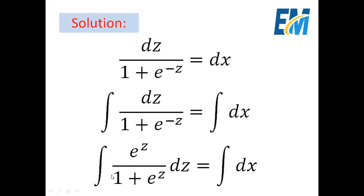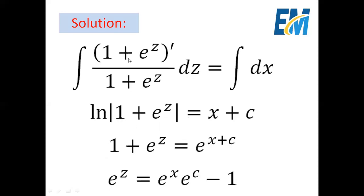Note that the derivative of the denominator is the numerator. So, we are integrating du over u. The result is ln of the absolute value of 1 plus e to the power z equals x plus c. Here, we can apply the exponential to both sides. So, we will have 1 plus e to the power z equals e to the power x plus c.